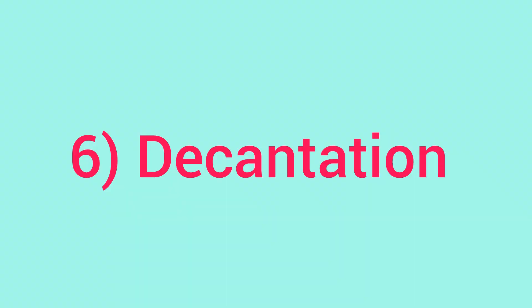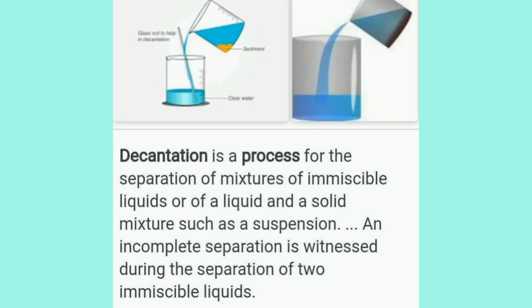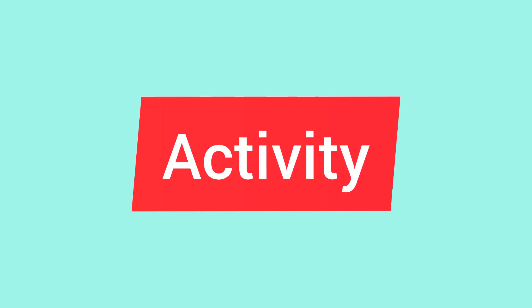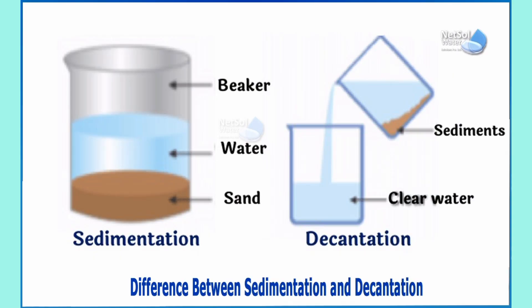The sixth method is decantation. Decantation is a process of separating insoluble solid particles from liquid. For example, after sedimentation, the pure water is separated from the settled sand particles. The activity here is: mix the sand and water in a glass, keep aside for some time, and pour the clear water into another beaker. This process is called decantation, and the poured liquid is called decanted liquid.